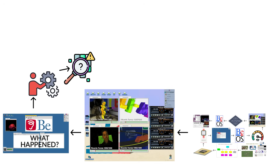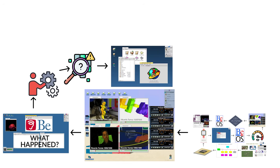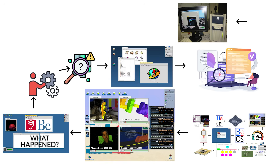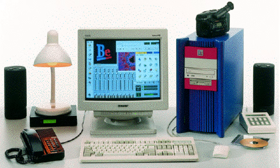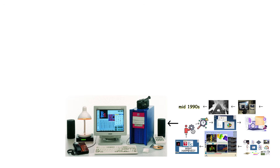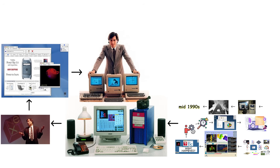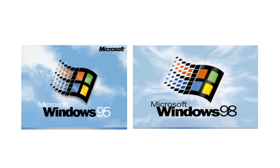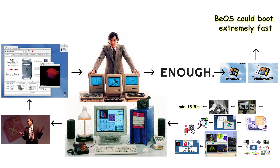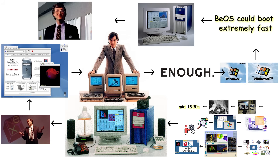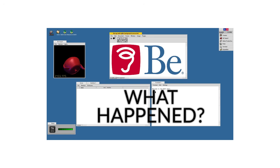In practice, it had the same problem many promising operating systems face: almost nobody shipped hardware for it, and almost nobody wrote software for it. Be Incorporated tried partnering with Apple in the mid-1990s, hoping BeOS would become the future Mac operating system. Apple decided to buy NeXT instead, and BeOS was left without a major hardware partner. They then tried targeting the consumer PC market, but that was already locked down by Windows 95 and Windows 98. BeOS could boot extremely fast — sometimes in 10 seconds on the hardware of the time — but users pick the platform that actually runs their applications, not the one that starts quickly and then has nothing to open.